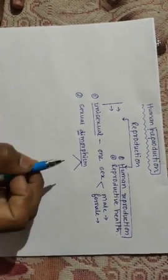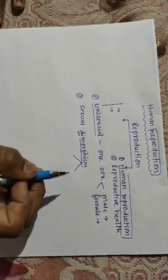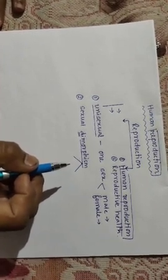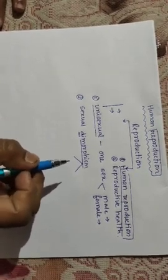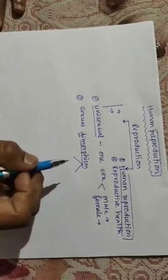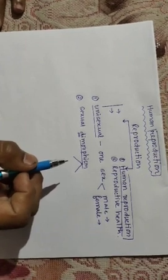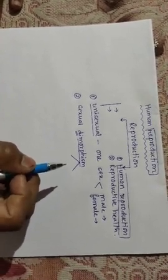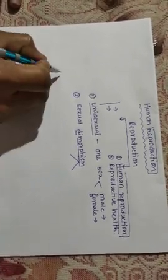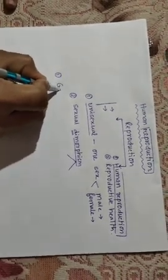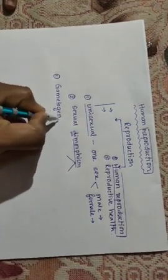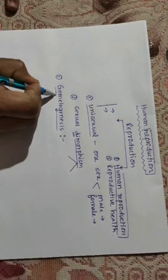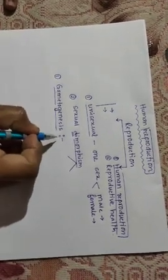Now, human reproduction takes place in certain phases — the total reproductive process in the case of human beings is completed in nine phases. The first phase of human reproduction is gametogenesis. From the term itself: 'genesis' means formation, 'gameto' means gamete — so gametogenesis is the process of formation of gametes.